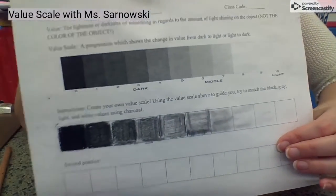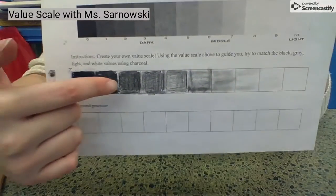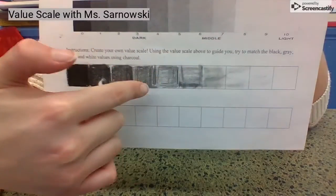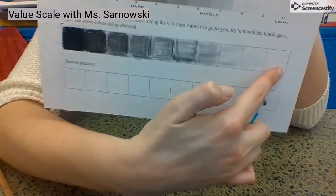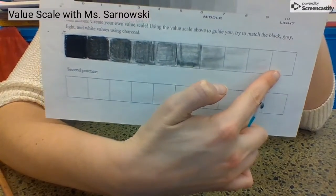So you can see that this is a process that takes some time, right? First, you're gonna start with your dark. It's going to become a medium value. And finally, your last box should be completely white.